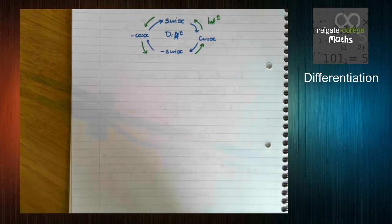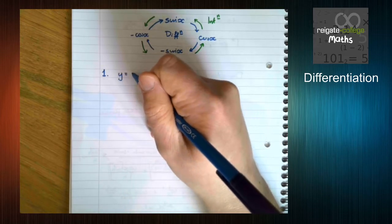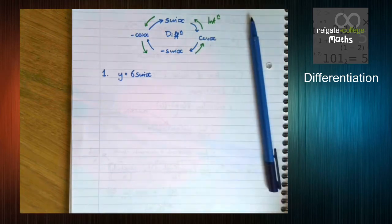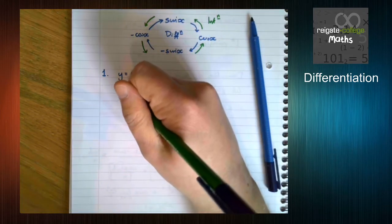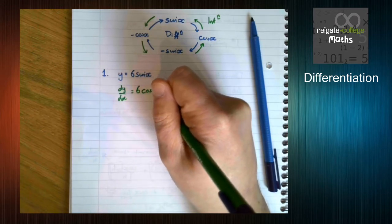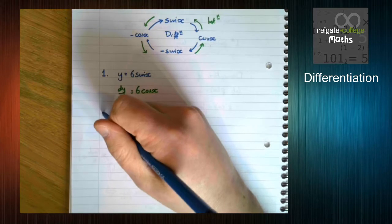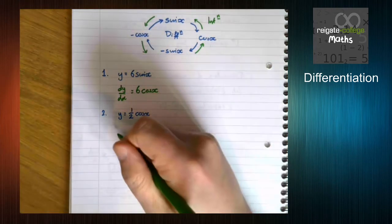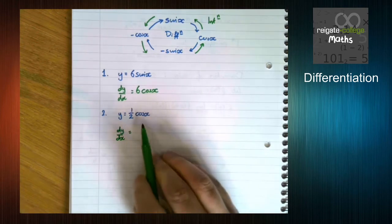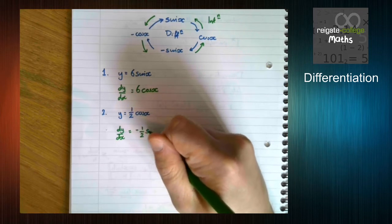Let's look at a few straightforward examples. If y equals 6 sin x, then dy by dx is 6 cos x — the coefficient on the front doesn't change. Likewise, if we have a half cos x, then cos x differentiates to minus sine, so the answer is minus a half sine x.